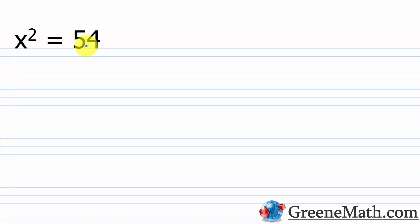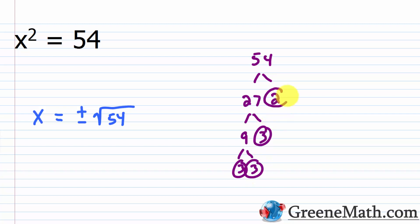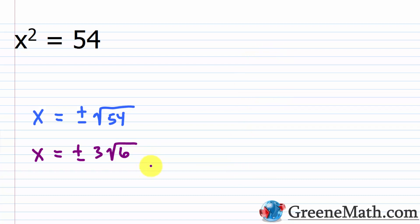Let's look at another one: x squared equals 54. Using the property, x is equal to plus or minus the square root of 54. Since 54 is not a perfect square, we can break it down. 54 is 27 times 2, and 27 is 9 times 3. Since 9 is a perfect square, I can pull that out. So x equals plus or minus 3 times the square root of 6. You can also write it as x equals 3√6 comma negative 3√6.